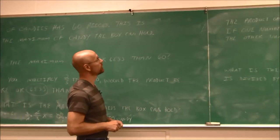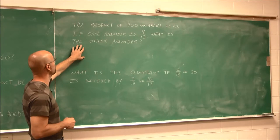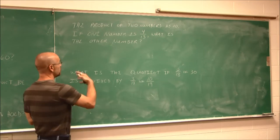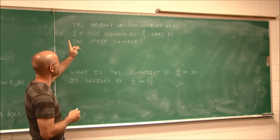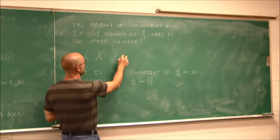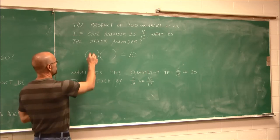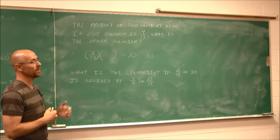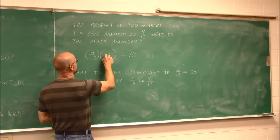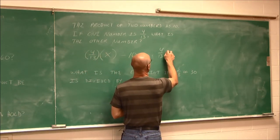Let's move on to another application. It says the product of two numbers is 10 — and product means multiply. If one of the numbers is 4 thirteenths, what is the other number? We set this up similarly: the product of two numbers equals 10, and one of the numbers is 4 thirteenths. What is the missing piece? I'll use x as my variable. So we have 4 thirteenths times x equals 10.